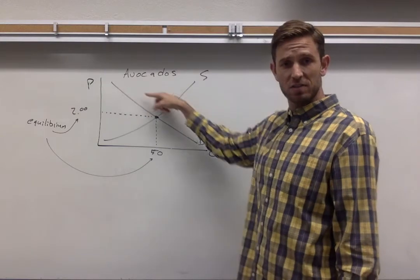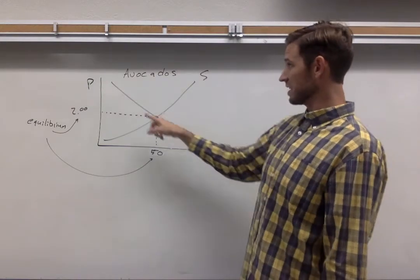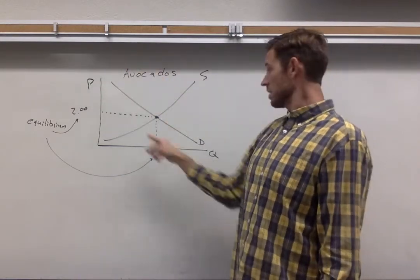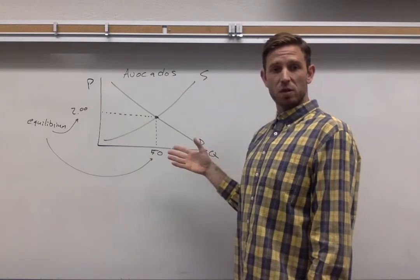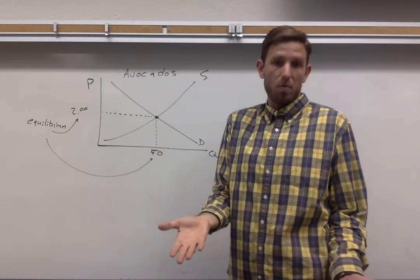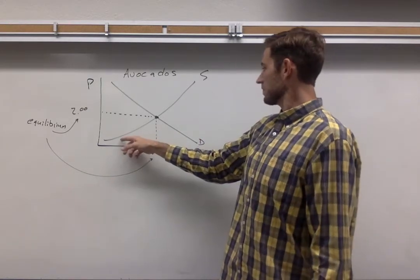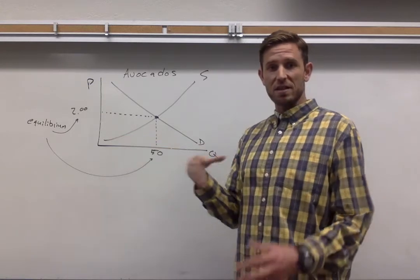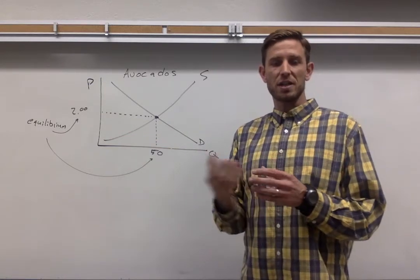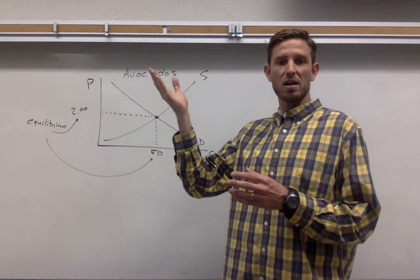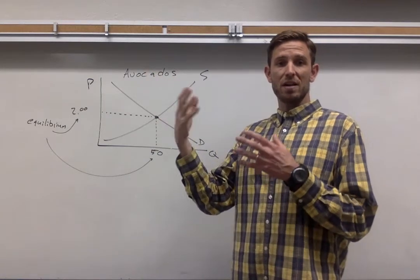You can see that the demand curve is downward sloping. That's just telling us that when avocados are pricier, the amount that buyers are willing and able to buy is smaller, of course. And when it comes to firms, it's the opposite. Low prices mean that firms aren't going to be willing to sell too much, and then as that price gets higher and higher, firms respond by wanting to sell more and more.